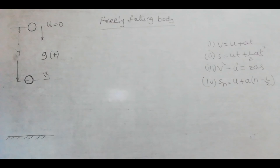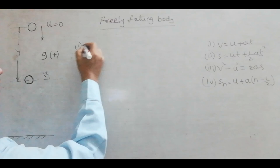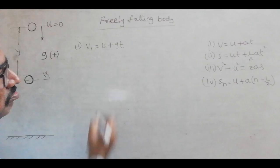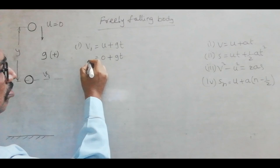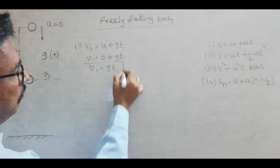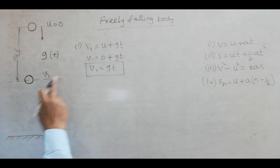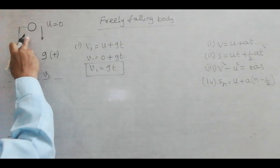The instantaneous velocity V1 is equal to U plus GT. Here U is 0, so it is 0 plus GT. So V1 equal to GT. The value of this velocity depends on the local acceleration due to gravity as well as the time for which the body travels downwards.